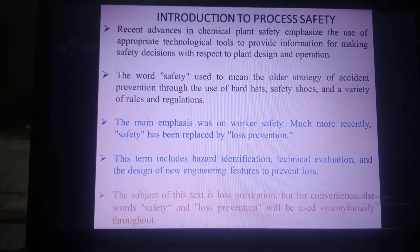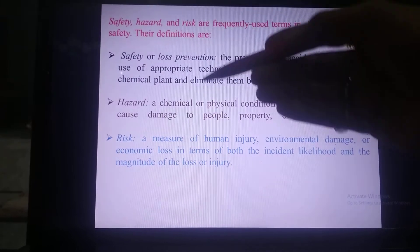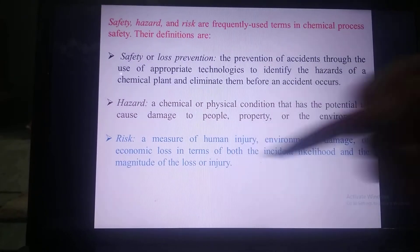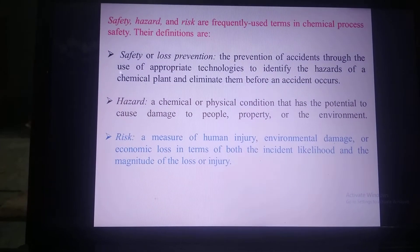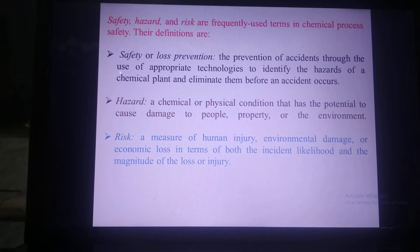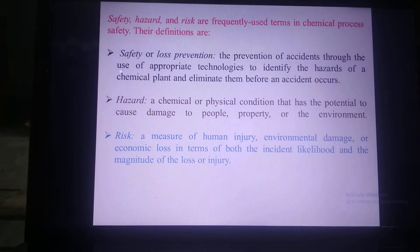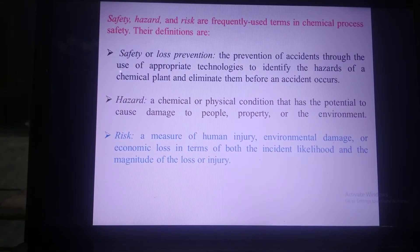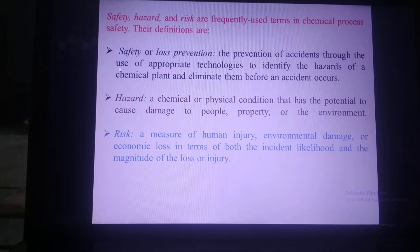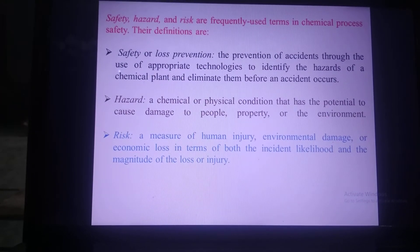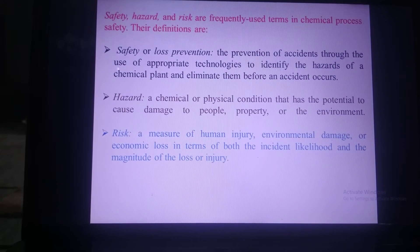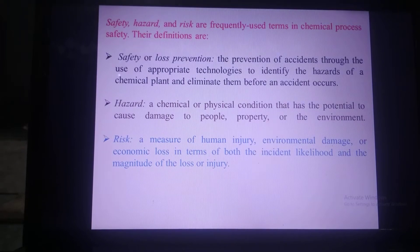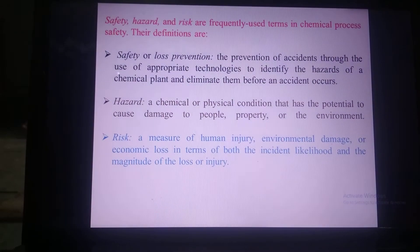In these lectures we will learn about three basic terms: safety, hazard, and risk. The first definition is safety — safety is the prevention of accidents through the use of appropriate technologies to identify the hazards of a chemical plant and eliminate them before an accident occurs.